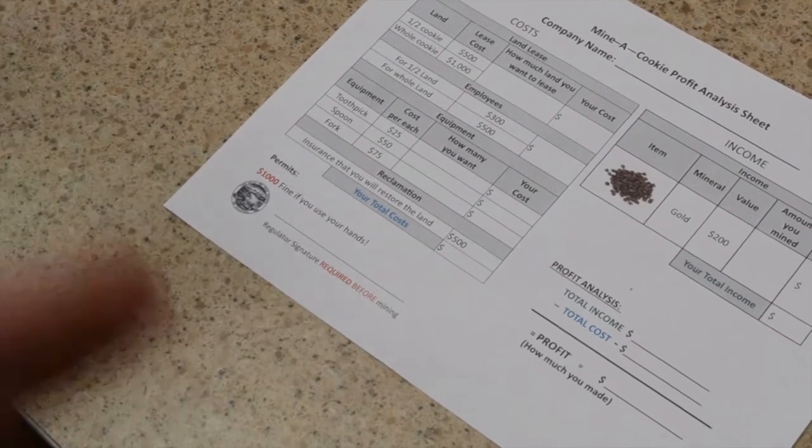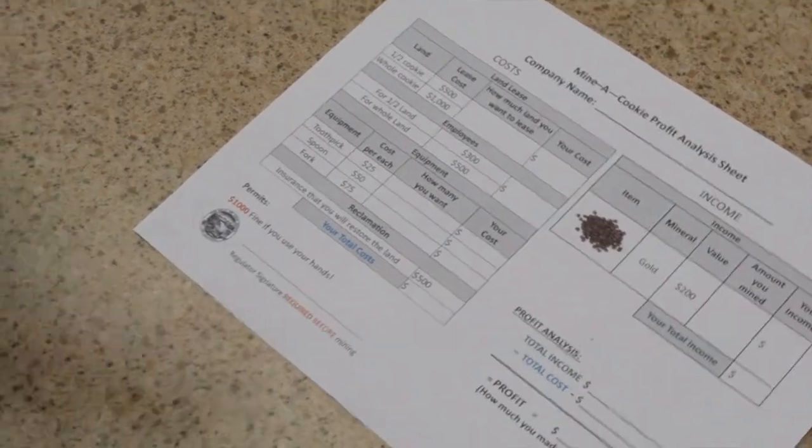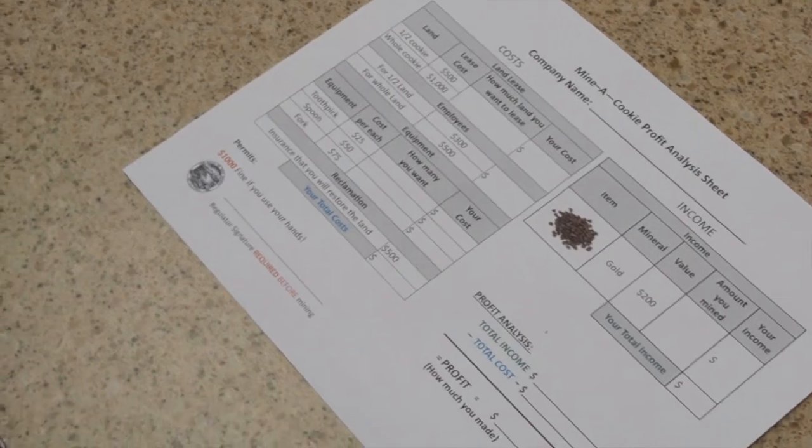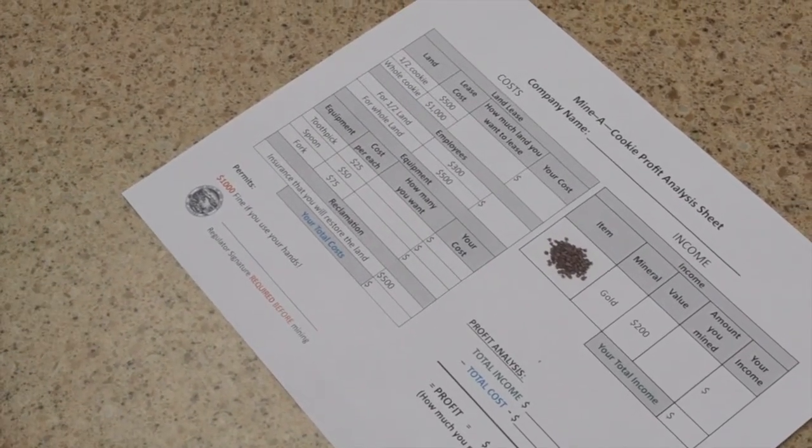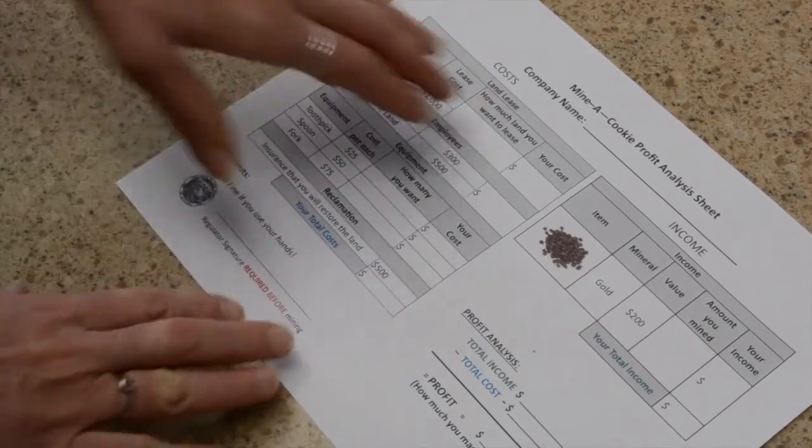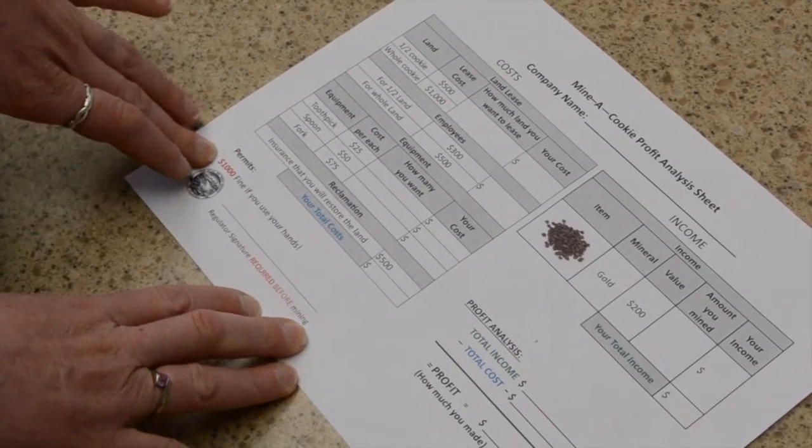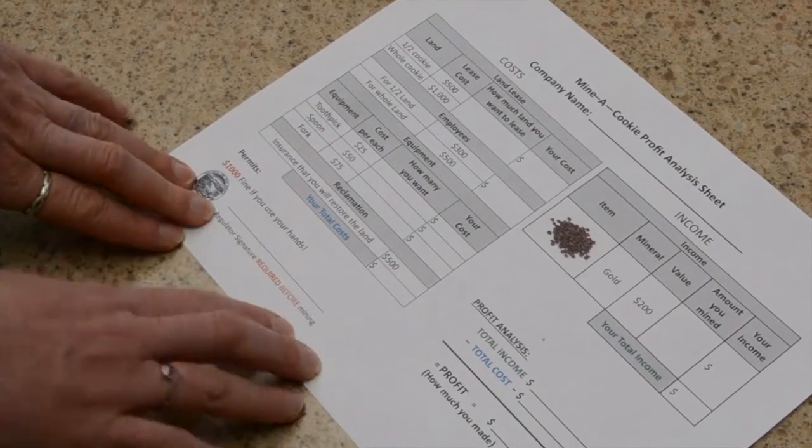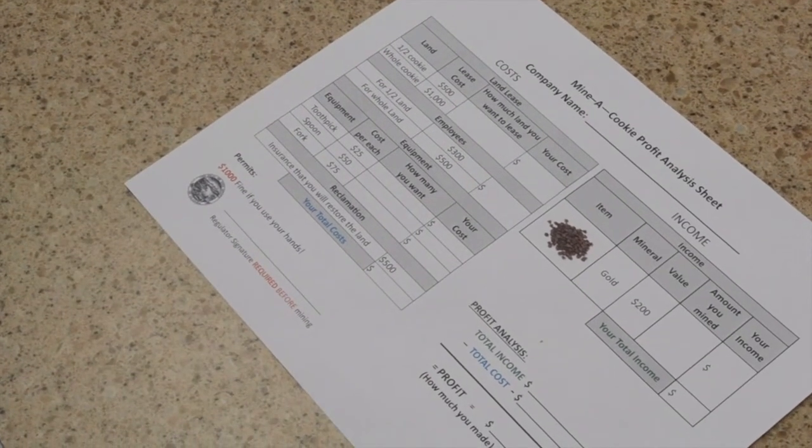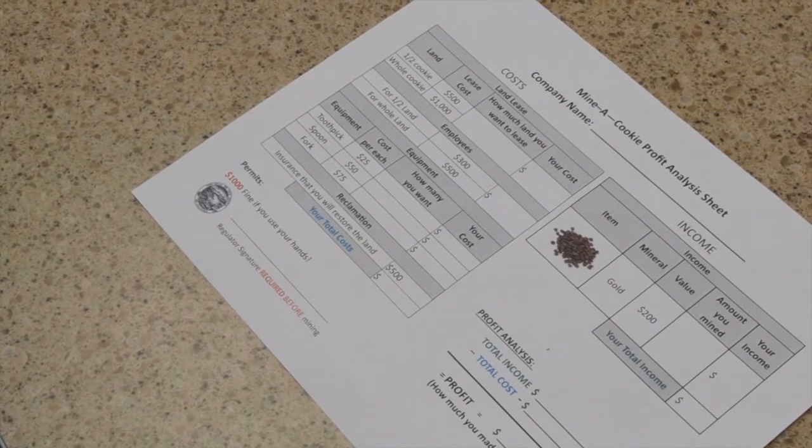everything needs to stay on their plate. And it's a $1,000 fine if they disturb the environment around them, aka the table or the classroom. Once they've totaled all their amount and have agreed to these rules, then you as the regulator can sign off before they're allowed to get their cookie and begin their mining project.